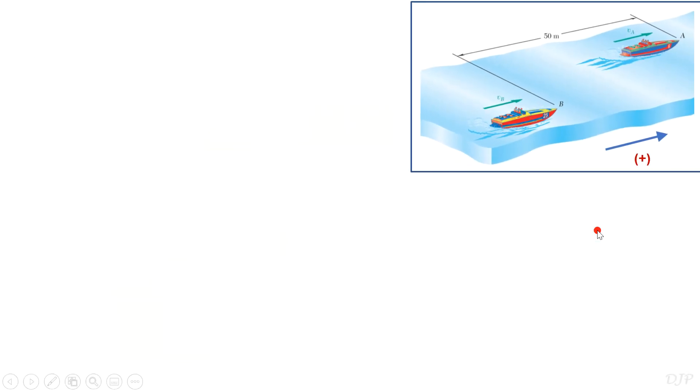We are given the distance between the boats from their initial position as 50 meters, their initial velocities as 180 kph, the final velocity of boat A as 225 kph, and the elapsed time that they met equal to 8 seconds. We are then required to solve for the acceleration of each boat and the relative velocity of boat A with respect to boat B.